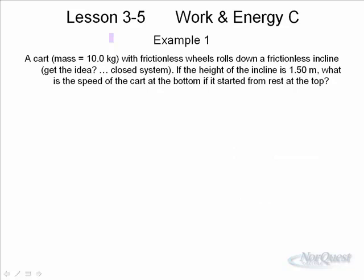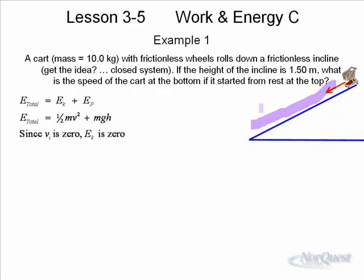Let's look at an example. In the first example, a cart with a mass of 10 kilograms with frictionless wheels rolls down an incline and it is a closed system because I said frictionless incline. The potential and the kinetic, the sum of those two will always be constant. They're giving you the height of the incline. What's the speed of the cart? We can say at the top of the incline, we have lots of potential energy. As the cart slides down the track, it will lose potential energy but gain kinetic energy.